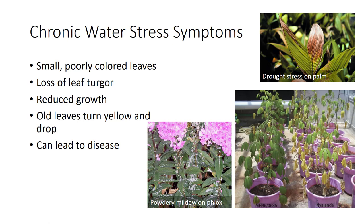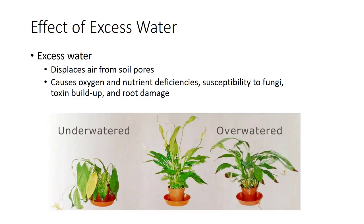Seed germination is very sensitive to water shortage. While seeds efficiently absorb moisture through the seed coat, the emerging seedling is easily injured by dry soil. Excess moisture displaces air from soil pores. While small amounts of oxygen are dissolved in water, it is quickly used up by soil organisms, so wet soil rapidly becomes oxygen deficient, or anaerobic.